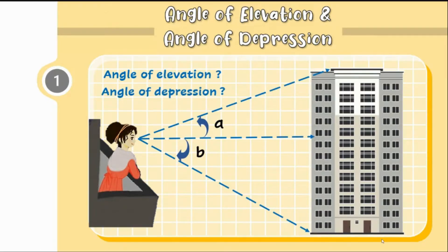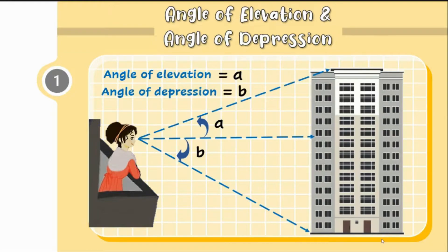The angle of elevation here is angle A, which is formed when she is looking up. While the angle of depression here is angle B, which is formed when she is looking down. Now that you already know the concepts of angle of elevation and angle of depression, let us have some word problems involving angle of elevation and depression.